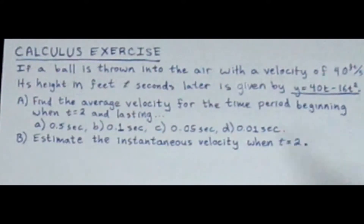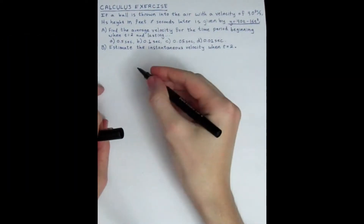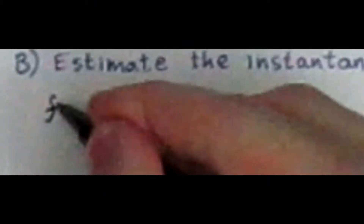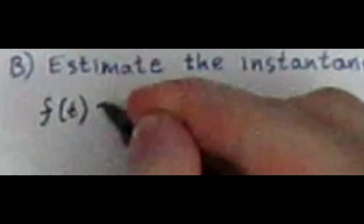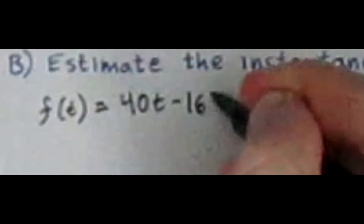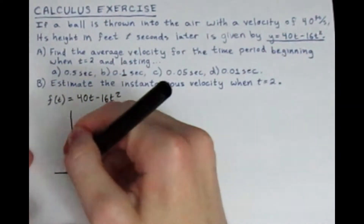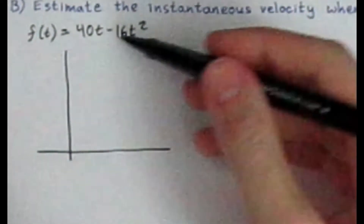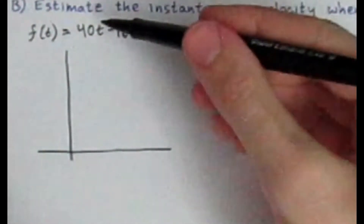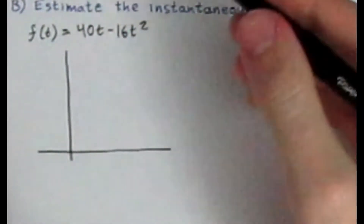This is a five-part question, and for teaching and illustrative purposes, I'm going to start out with drawing the graph. I'll put f of t equals 40t minus 16t squared. And if we notice, this is actually a parabola. Taking what we learned in algebra, we found the zeros and where the graph crosses the x-axis and the y-axis.